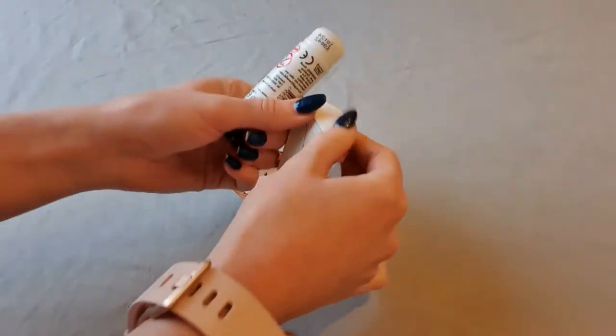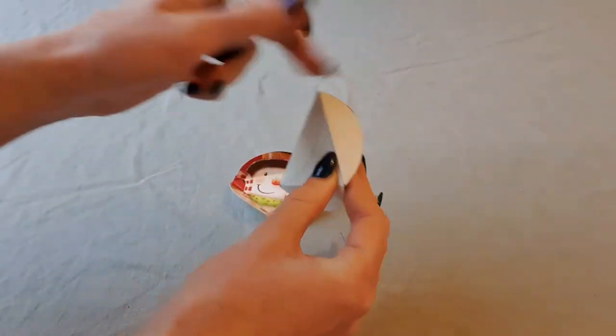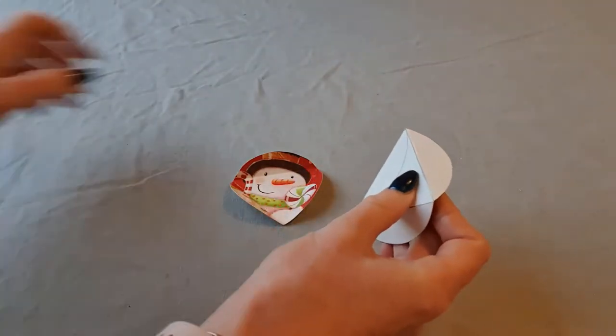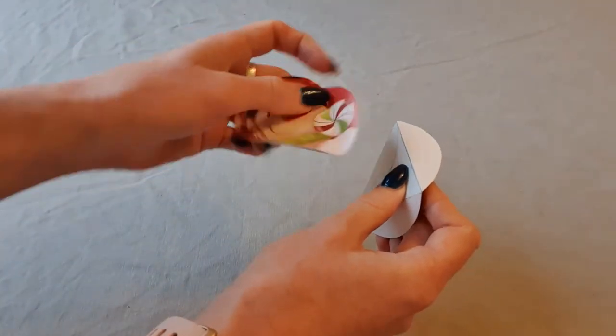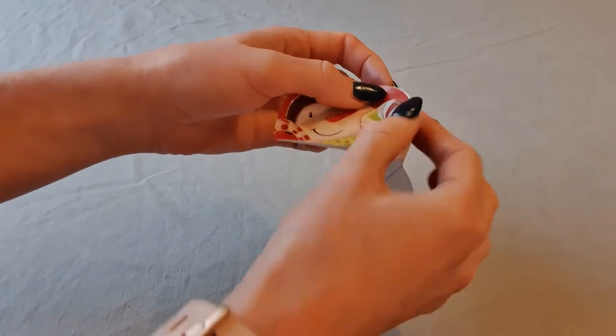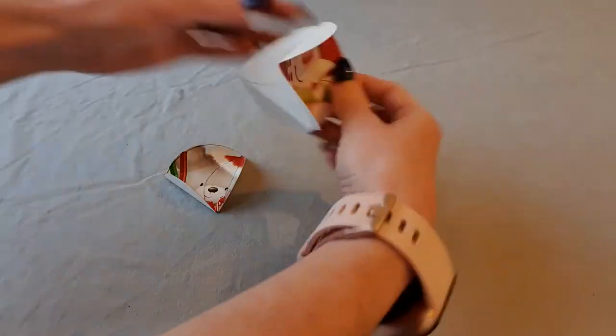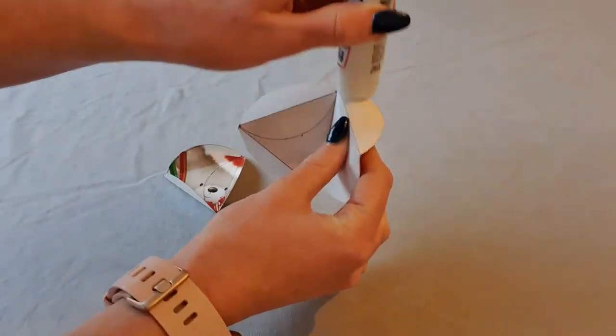Take two pieces and put glue on one of the flaps to carefully stick them together. Take a third piece and repeat.